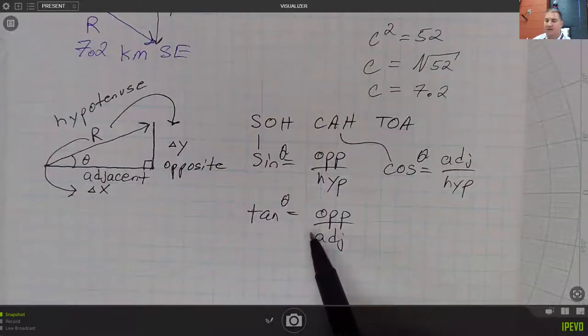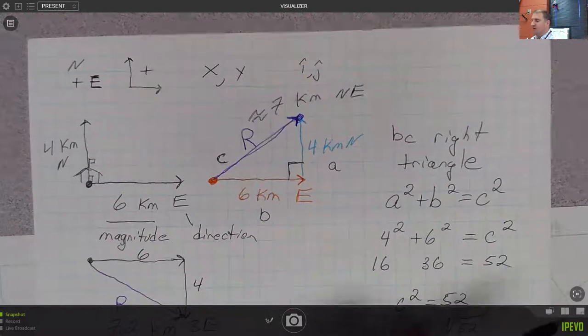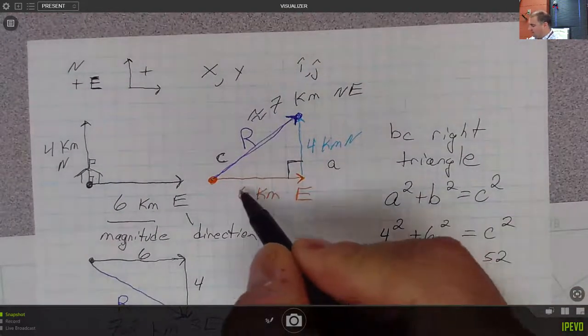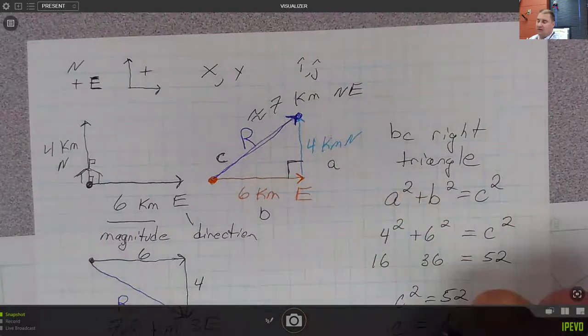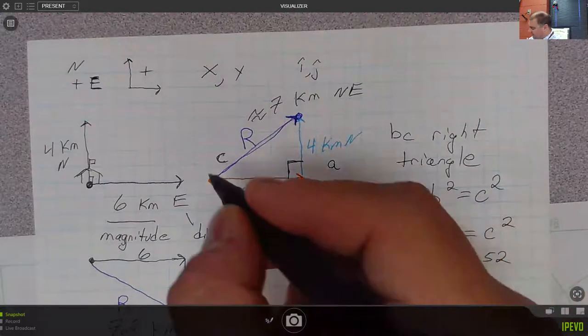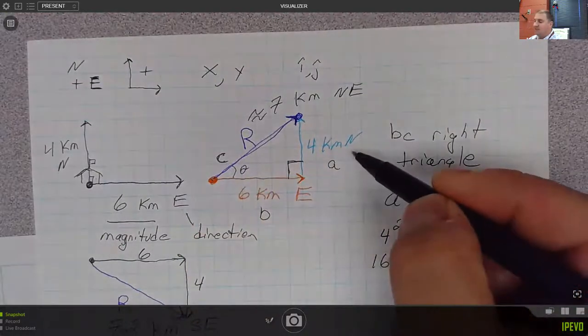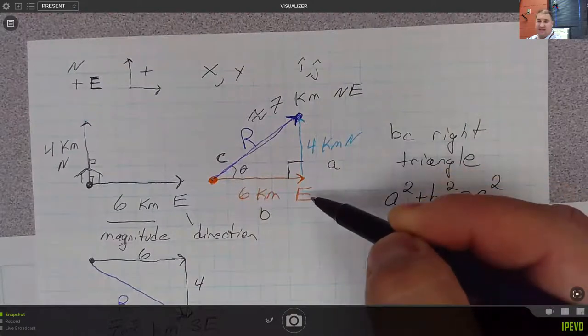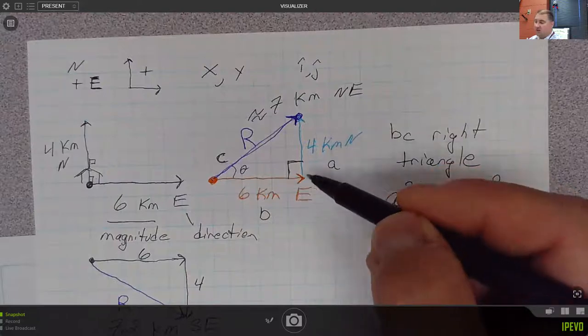In particular here, the tangent is going to be the most useful for us, because if we have these two components already of a resultant vector, notice that if this is the angle that we are looking for, then we have the opposite and the adjacent sides.